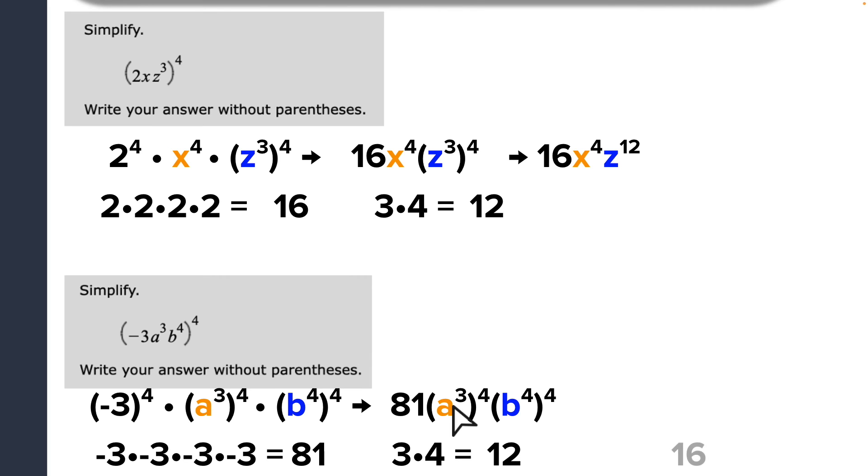And then, oops, that animated out of order. That was supposed to be 4 times 4 equals 16. So now I know my power for a is 12. My power for b is going to be 16. I just need to write that up here. So I have, darn it, that was another typo. That should be 81, not 16. a to the 12th power and b to the 16th power.